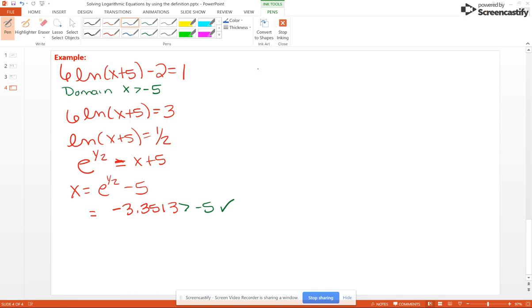Say we have common log of 3x minus the common log of x minus 2 equal 1. As far as domain goes, we actually have two domains here. This one's going to be x greater than 0, but this one's going to be x greater than 2. x greater than 2 is a smaller set than x greater than 0, so that's the one we're going to be looking at at the end.